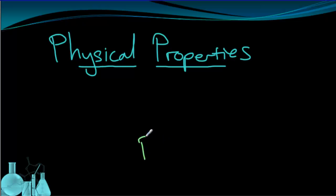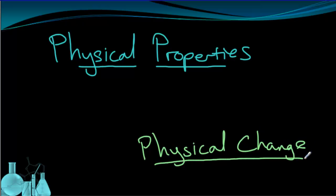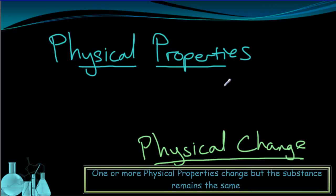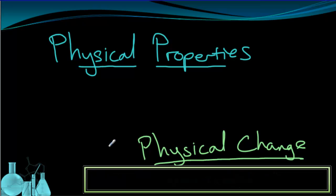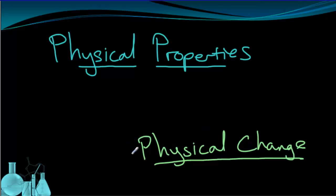So what I just did is called a physical change. This is where you change one or more of the physical properties without actually changing what the substance is. Now, this is going to sort of help us go to our next section here. Another physical change that's very common is when you melt an ice cube. So ice is a form of water and when it melts, it becomes liquid water. We call that a change of state. That's another kind of physical change. And we're going to start talking now a lot about the states of matter.